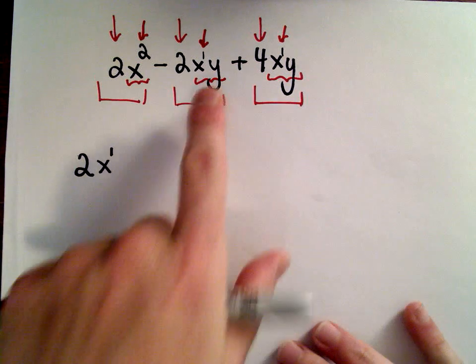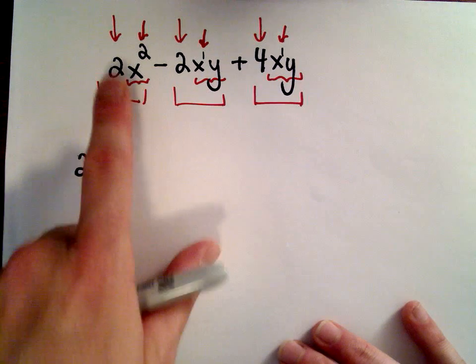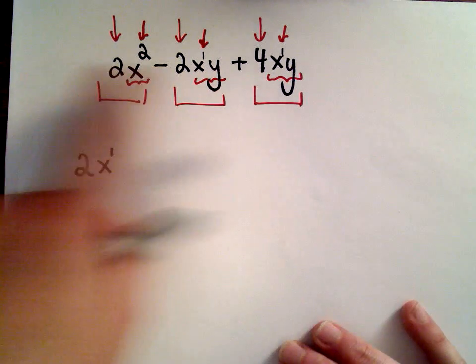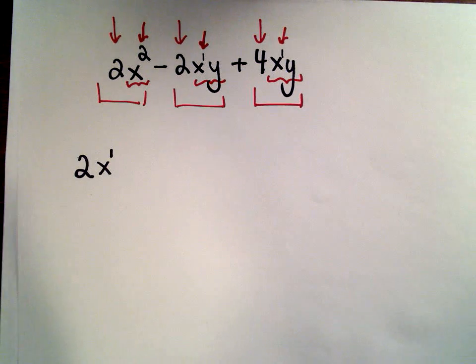The next thing I think is, well, the second and third term both involve a y, but the first one doesn't. So if even one of them didn't have a y, that means you can't factor it out. So I've now got everything that I can factor out. So now I'm going to put a set of parentheses.